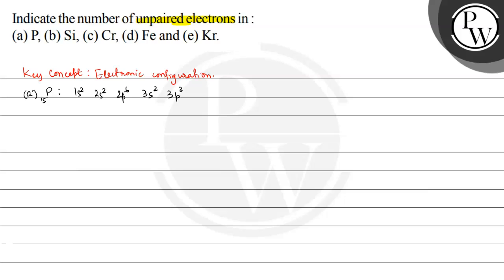If I write 3p3 in expanded form, this is 3px1, 3py1 and 3pz1. So in this, the number of unpaired electrons is 3.